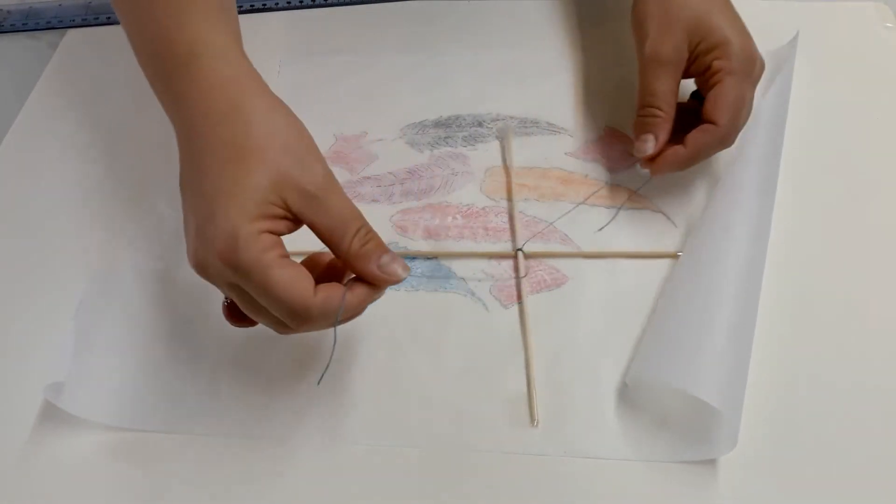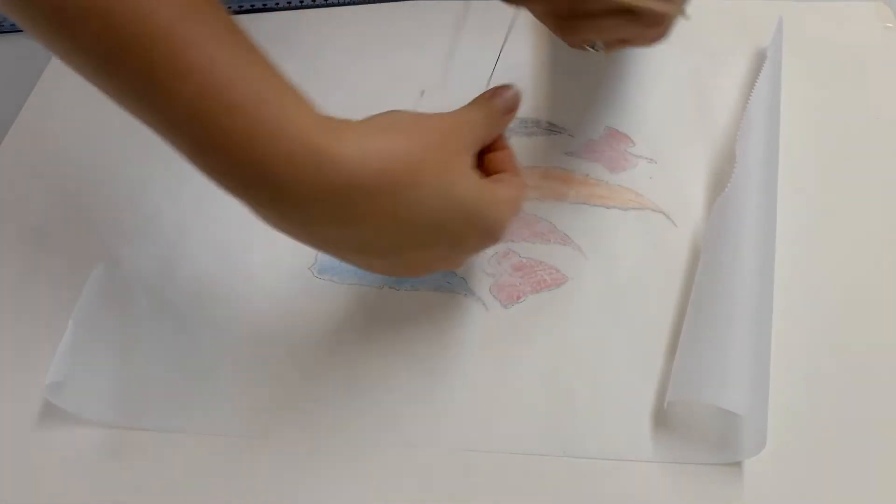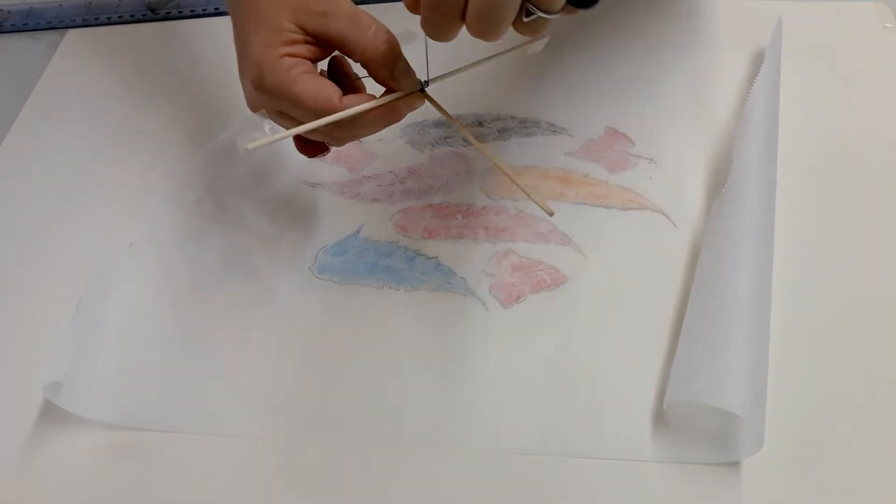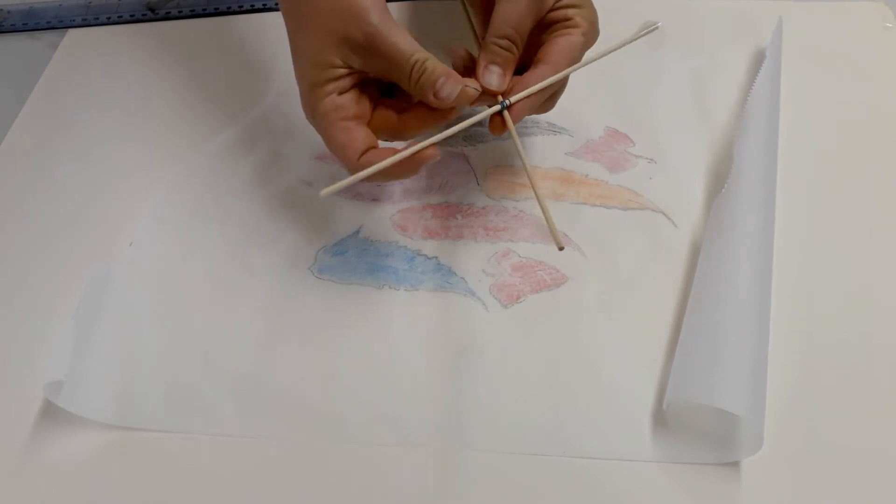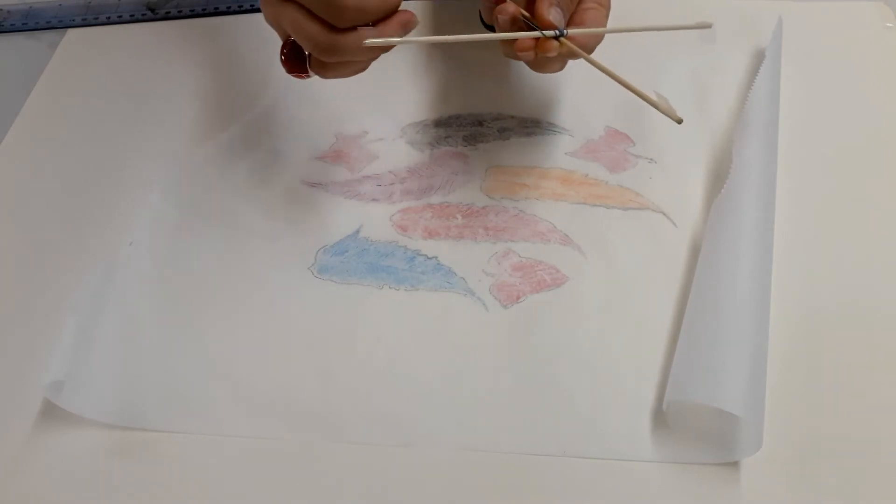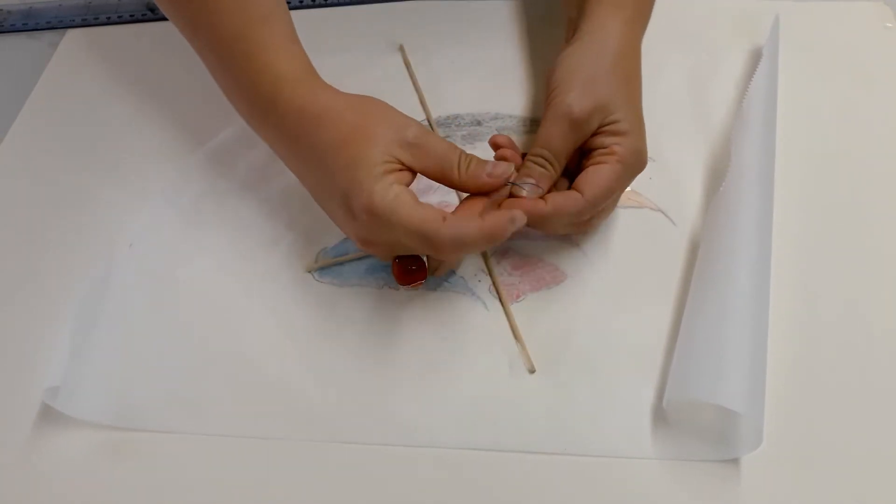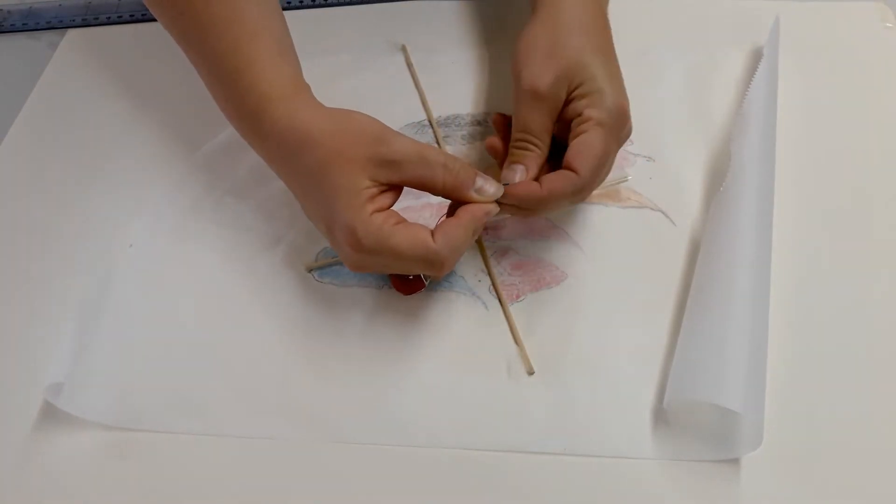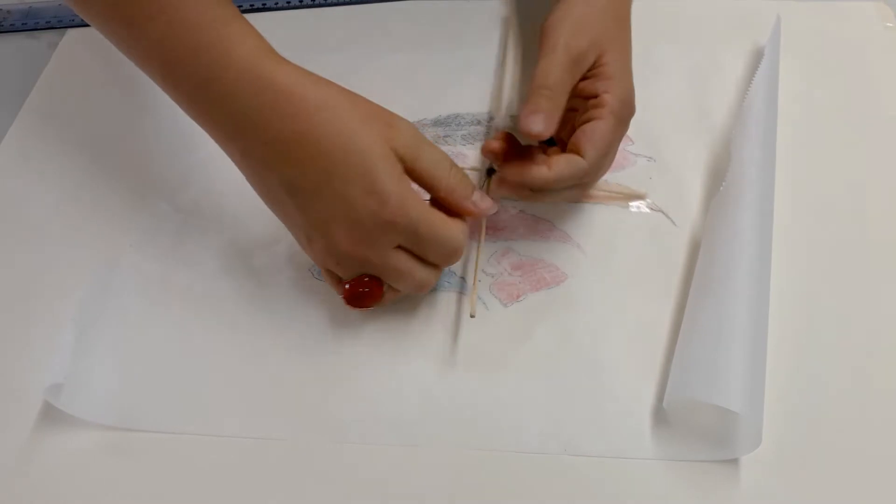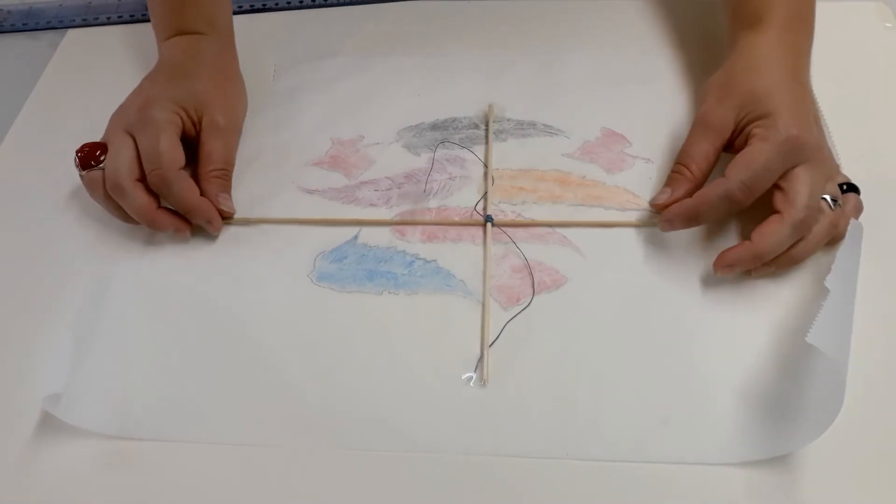We're going to tape it again. You might need to get an adult to help you with this bit. We're basically working around the cross, taping it in place and this just reinforces it and stops it falling apart. Then I'm going to tape it back down onto my paper where I want it. You can do it in a knot or a bow. There is my cross.